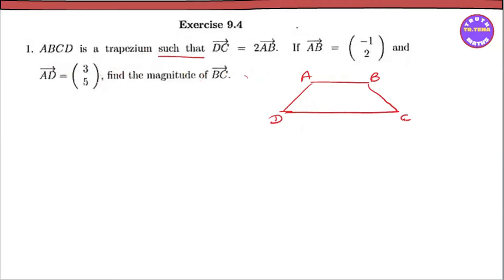DC and AB are given. The DC vector is 1 over a value, and the AD vector is 2 over 1. So that's important to know and practice.